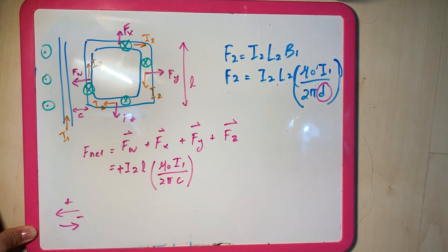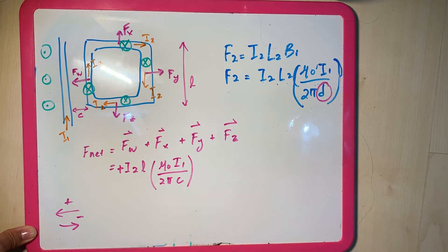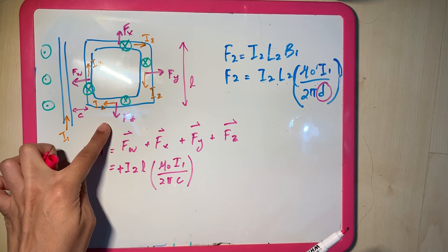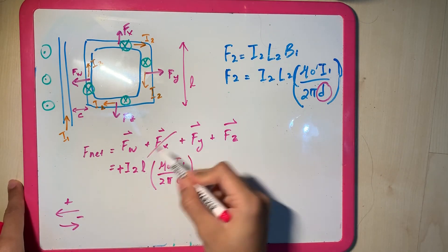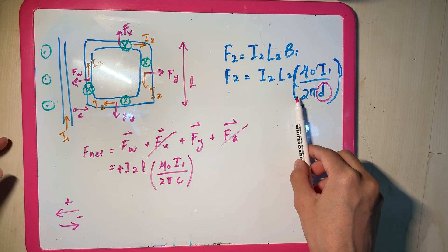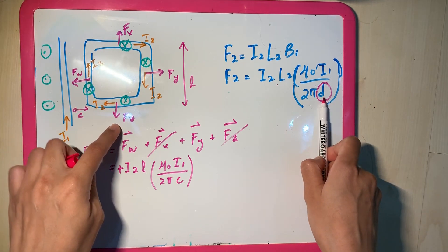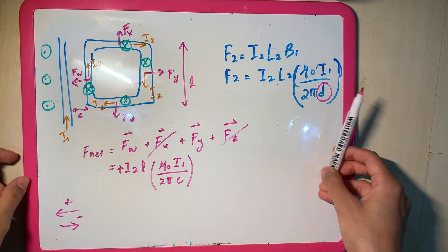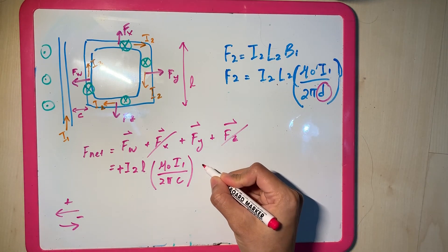FX will have the same magnitude as FZ — they have the same D, the same L, and the same I — which means they have the same magnitude but opposite directions, so FX cancels FZ. You don't have to calculate them separately. Which means we only have to account for FY.